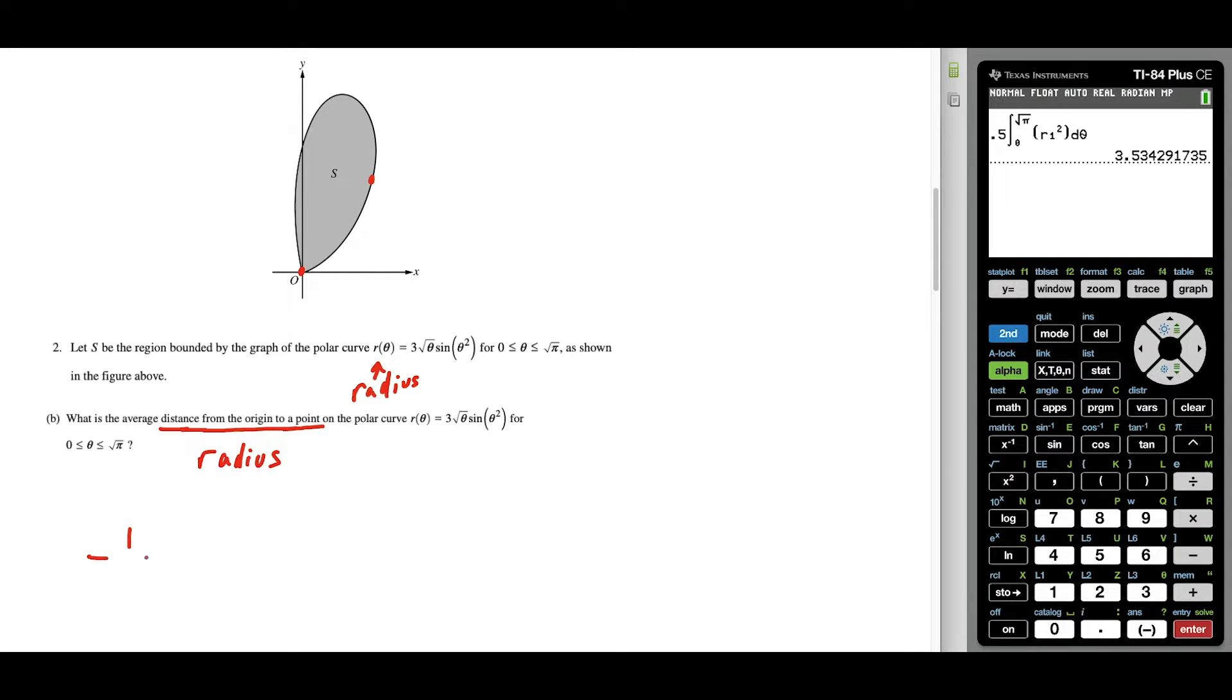So if we want to find the average value of r of theta from zero to square root pi, then we're going to be doing one over square root pi minus zero. And we've got the integral from zero to square root pi. And we've got r of theta d theta. So for this question, you have to know the average value of f of x over AB formula. This needs to be automatic by the time you get to the AP test. So it's an application of this question, but you just have to recognize that the function they're referring to here is the function for the radius, which is r of theta.